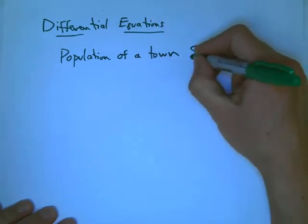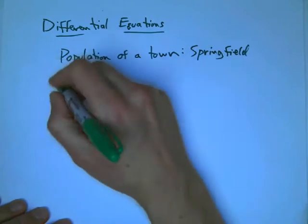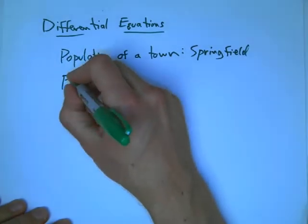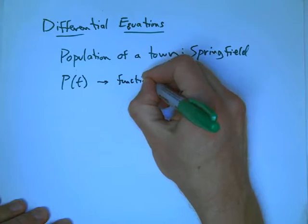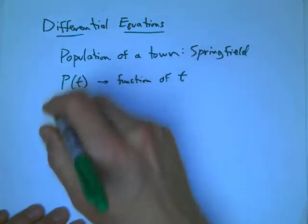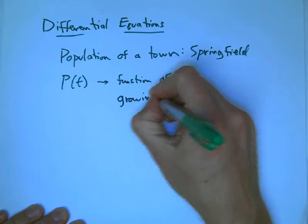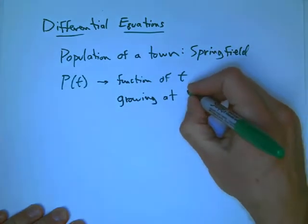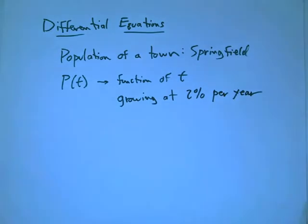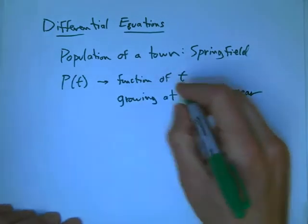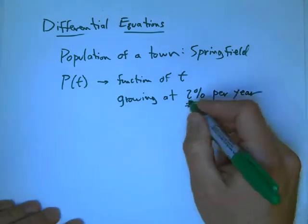Let's say Springfield. It's known that the population, it's a function of t, P(t), it's growing at 2% per year. So that's a rate of growth, but we have to think about it a little bit to figure out exactly what does that mean, 2% per year.